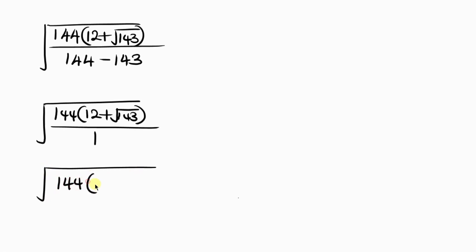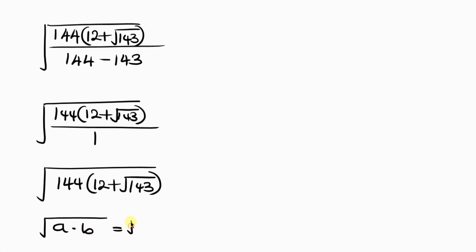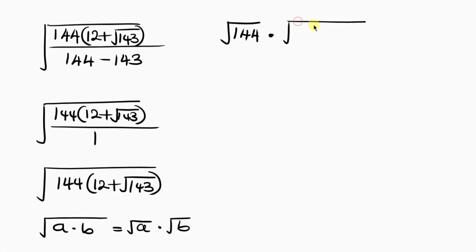Now there is a property of surds which says the square root of A times B can be written as the square root of A times the square root of B. We're going to apply this property, so the expression becomes the square root of 144 times the square root of 12 plus the square root of 143.